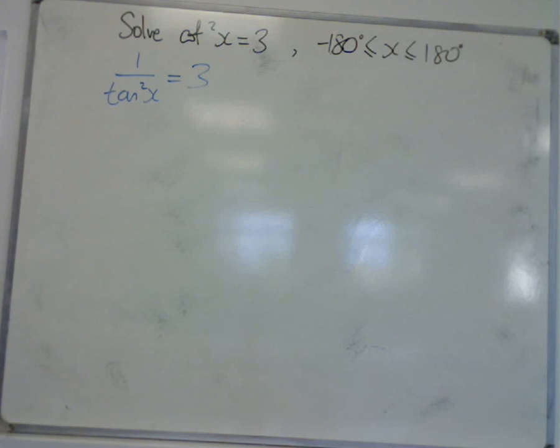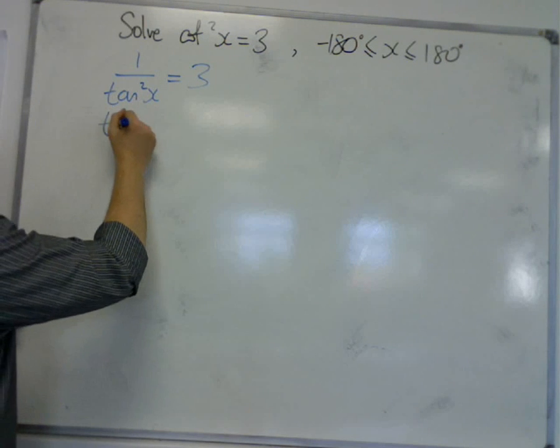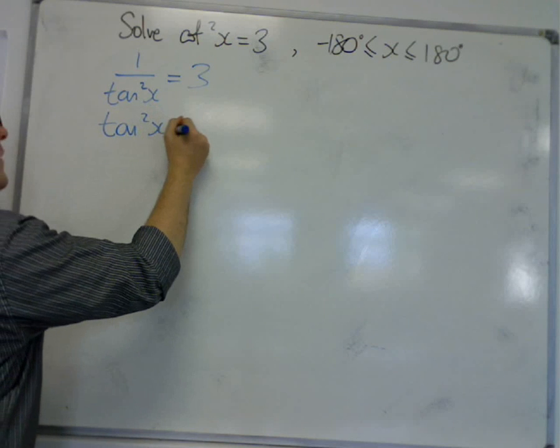So that's what cot squared is. So we can take the reciprocal of both sides, we can flip the fractions, and tan squared x is equal to 1 third.